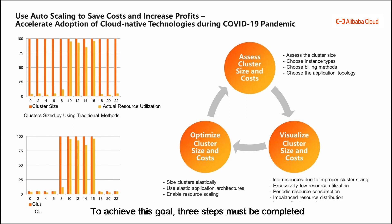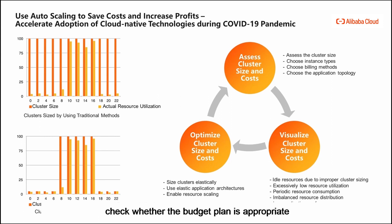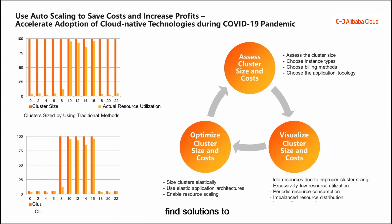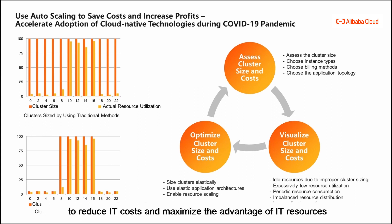To achieve this goal, three steps must be completed. First, enterprises need to allocate a budget for resources. Then they can use virtualization technology to check whether the budget plan is appropriate. If the budget plan is inappropriate, they must find solutions to optimize it. Among the solutions available, scaling is the most ideal solution. In the pandemic era, scaling is the optimal option to reduce IT costs and maximize the advantage of IT resources.